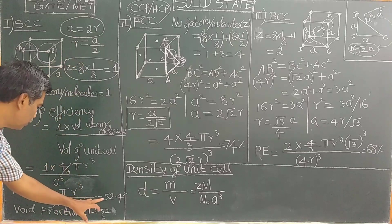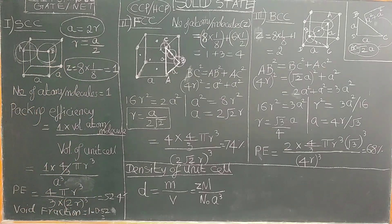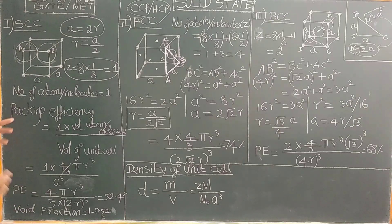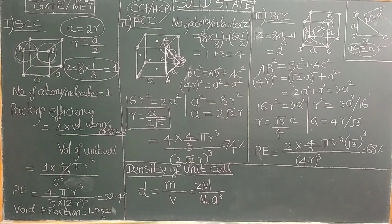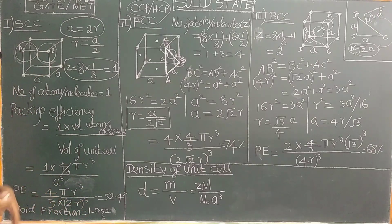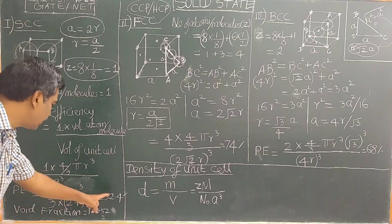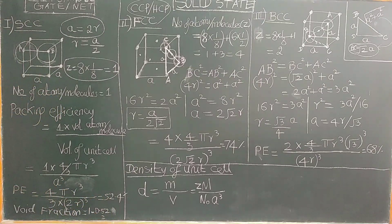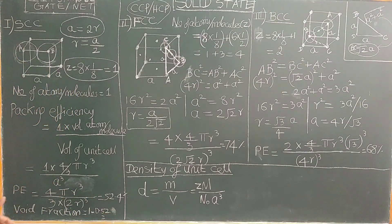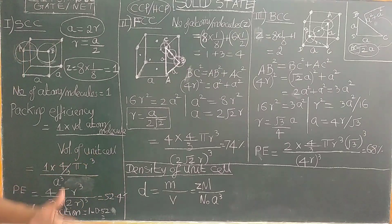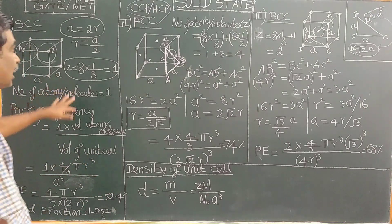Since A equals 2R, substituting A cubed equals (2R)³, the packing fraction is 52.4%. The atoms occupy 52.4% of the unit cell. Therefore, the void fraction is 100 minus 52.4, which gives 47.6%, or about 48% empty space in the unit cell.